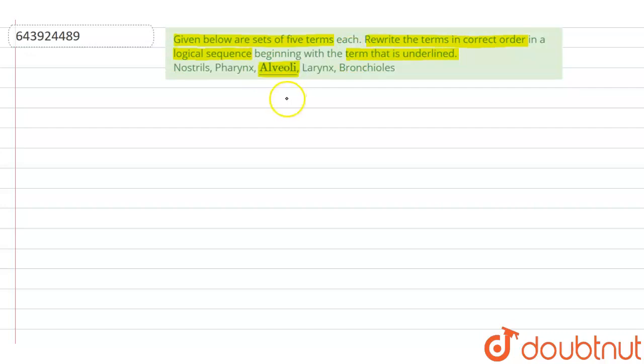If we take the respiratory tract, because alveoli is associated with respiratory tract, it starts with nose, nostrils which open into the pharynx. Then we have larynx, then trachea. Trachea bifurcates to form bronchi and they enter the lungs.